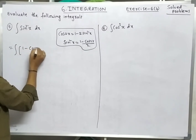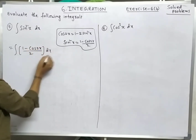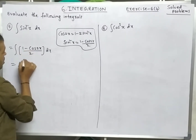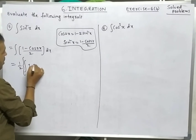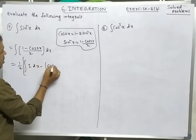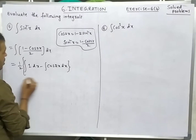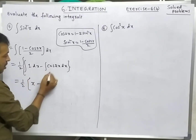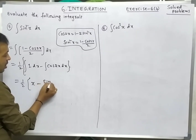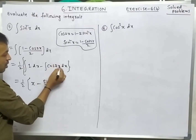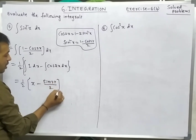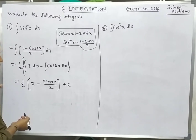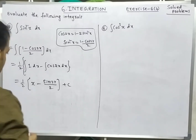Using the formula, integration of sin²x dx = integration of (1 - cos 2x)/2 dx. Take 1/2 constant outside: (1/2)·[integration of 1 dx - integration of cos 2x dx]. Now: integration of 1 dx is x, and integration of cos 2x is sin 2x divided by the coefficient of x, which is 2.